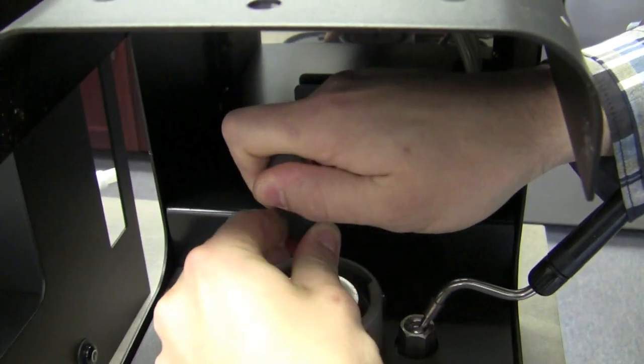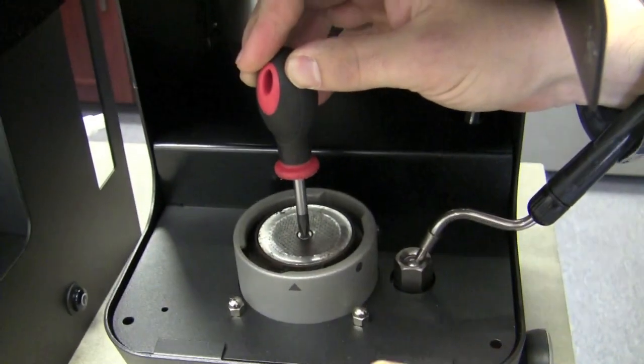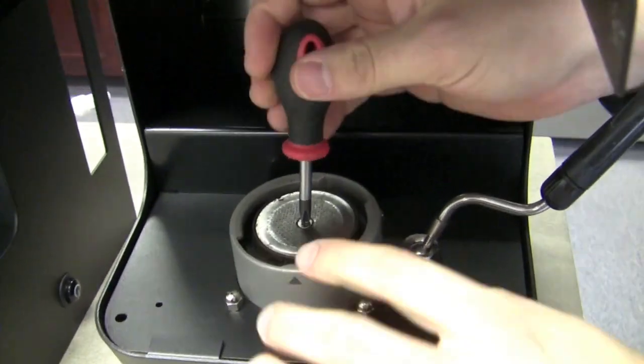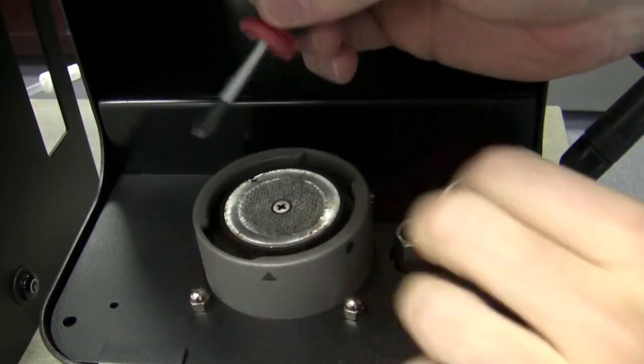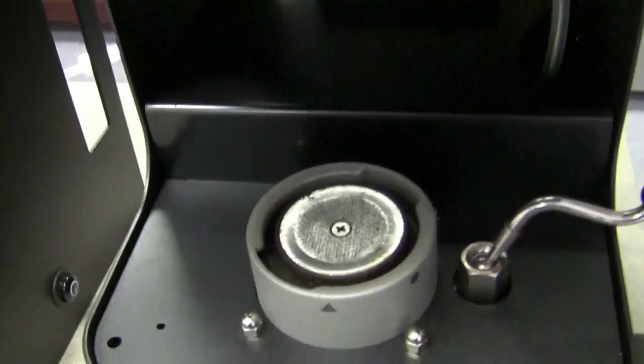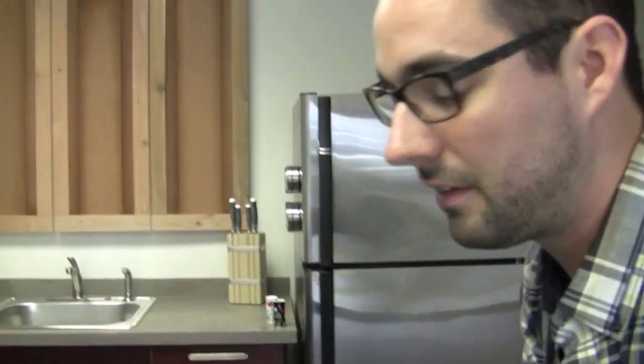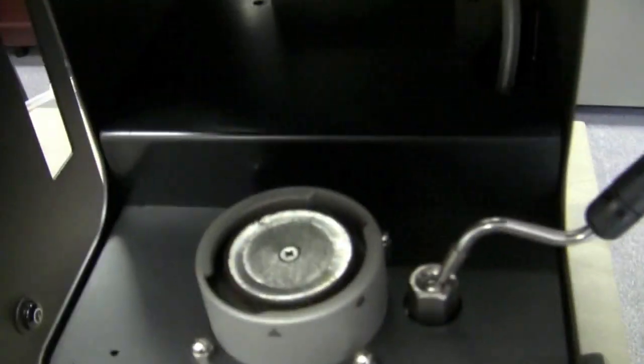Now, you're going to need a short one because there's not a lot of room here - a stubby. We're going to take this right out. A good thing to do - I know a lot of customers have trouble with this because it can get really tight from just getting hot and cold. If you do notice grounds all in there, get in there and clean out the grounds before you try unscrewing this. Otherwise, you're going to start stripping that screw.